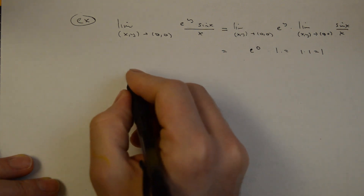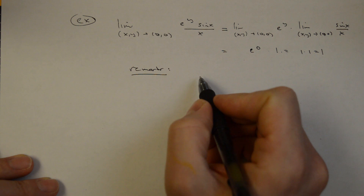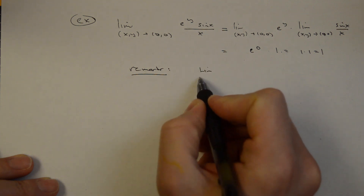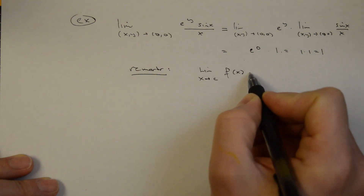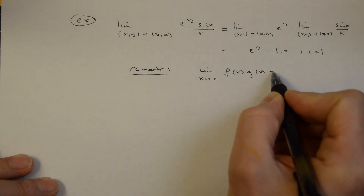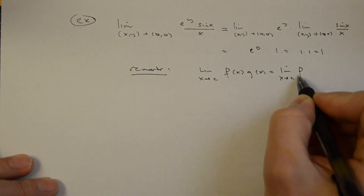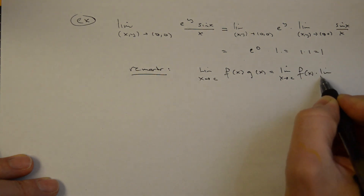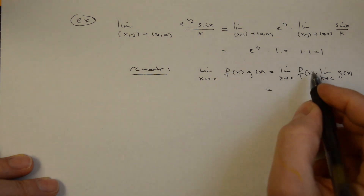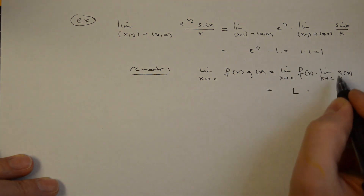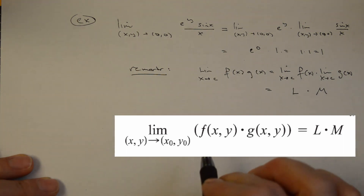A couple of remarks: the limit of a product is the product of the limits, provided they both exist. This is the rule that the limit as x approaches c of f(x)·g(x) equals the limit of f(x) times the limit of g(x) as x approaches c, provided both limits exist — say one equals L and the other equals M.